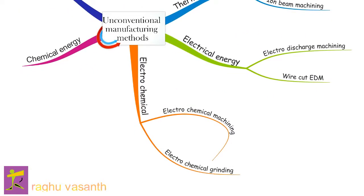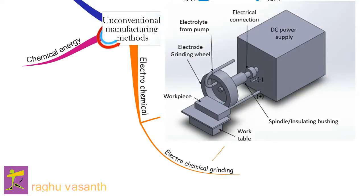Electrochemical grinding is a process that removes electrically conductive material by grinding with a negatively charged abrasive grinding wheel, an electrolyte fluid, and a positively charged workpiece. Materials removed from the workpiece stay in the electrolyte fluid.